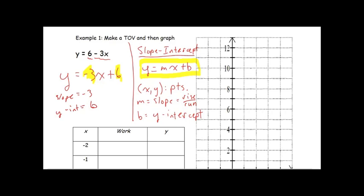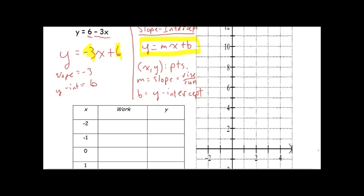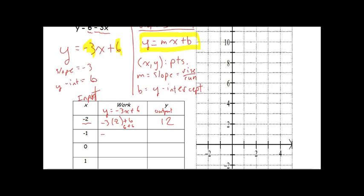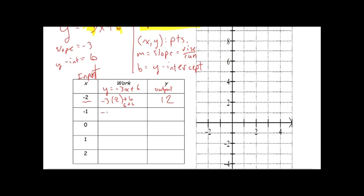So if we're asked to find a table of values and then graph, we have a bunch of inputs. Our x's are just our inputs, and our y value is just our output. We are going to put negative 2 in wherever we see an x into our equation, y equals negative 3x plus 6. For each input, we do negative 3 times the input plus 6. For negative 2: negative 3 times negative 2 is 6, plus 6 gives us an output of 12.